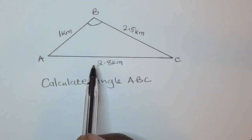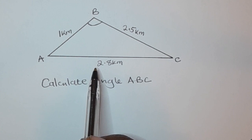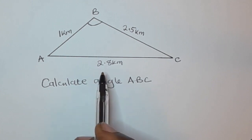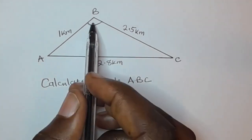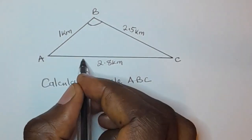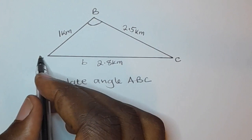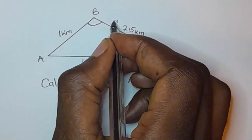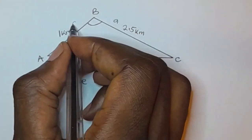So whenever you're given all the three sides of a triangle and you are being asked to find an angle, it means you are supposed to use the cosine rule. So this is B, capital letter B. On the opposite side here you write a small letter b. This is A, then you have a small letter a. This side is C, you have a small letter c.